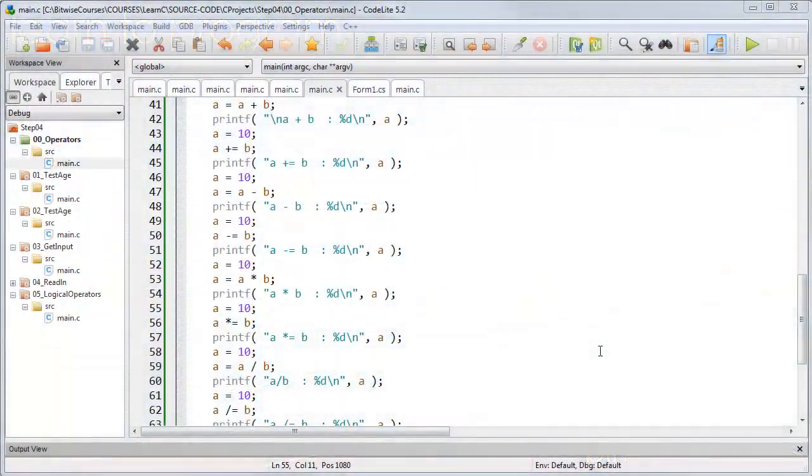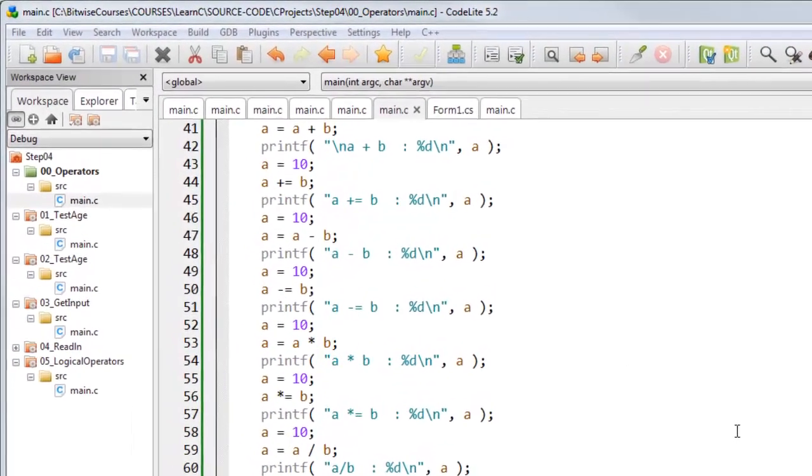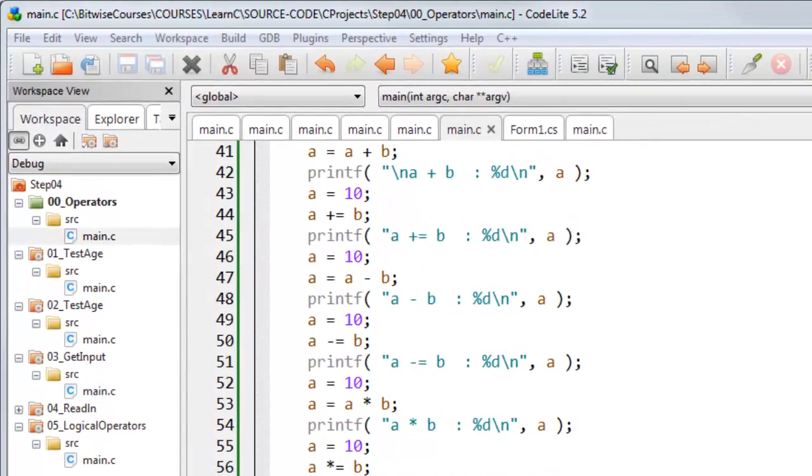Some assignment operators in C perform a calculation and then assign the result to a variable. These are called compound assignment operators.